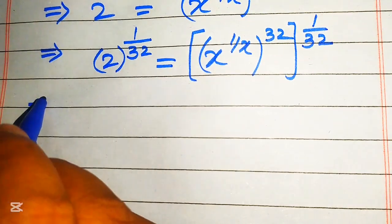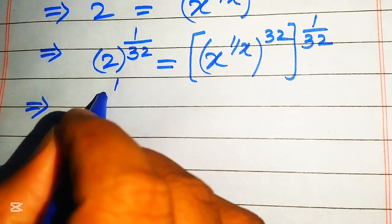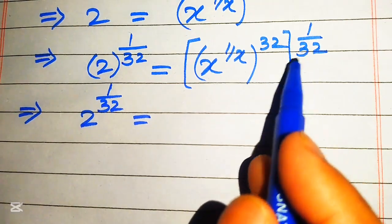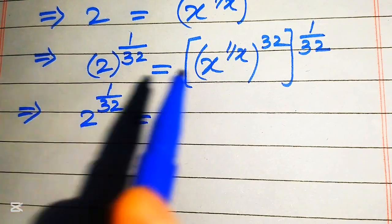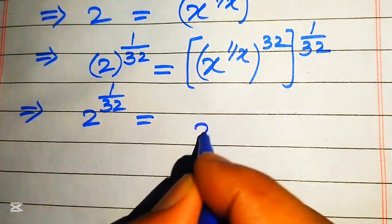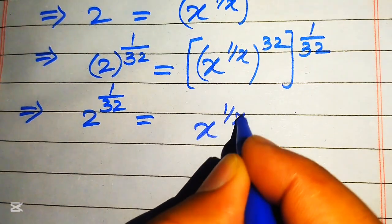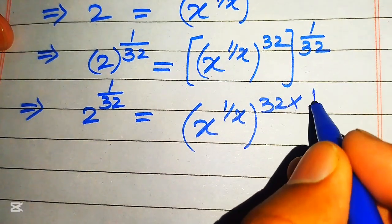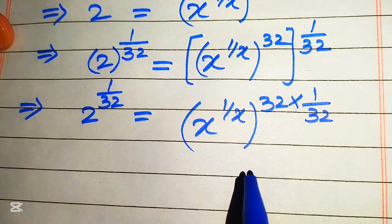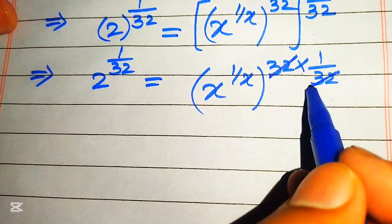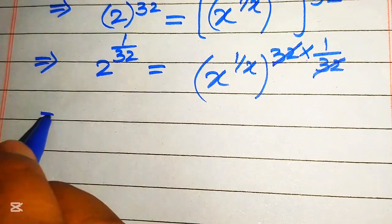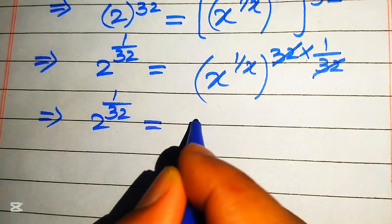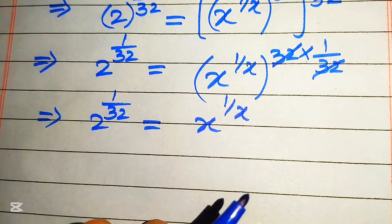On the left side we have 2 to the power of 1 over 32. On the right side, the exponents multiply: 1 over x times 32 times 1 over 32. The 32 and 1 over 32 cancel out, and we obtain 2 to the power of 1 over 32 equals x to the power of 1 over x.